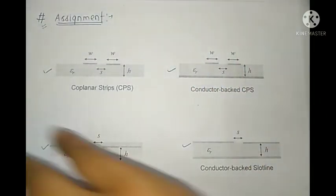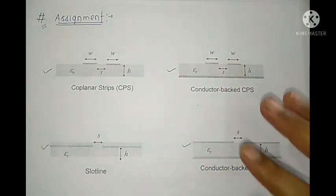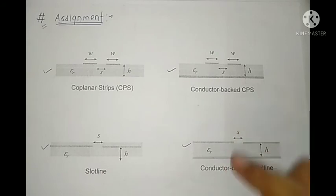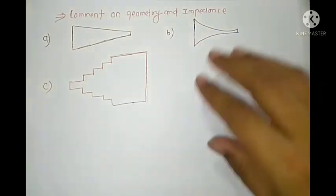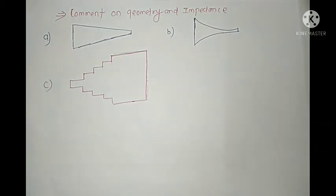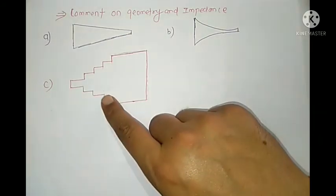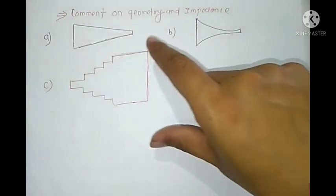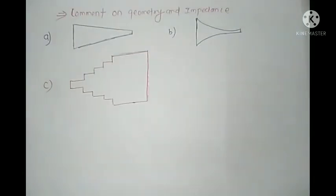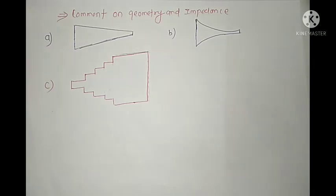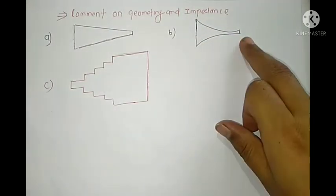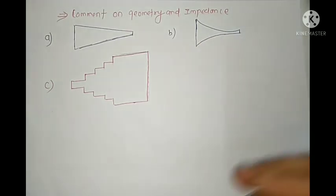This is an assignment for you: look at the given pictures and decide which ones are transmission lines, how many conductors are used, and whether each is uniform or non-uniform. By looking at the geometry, you can comment on uniformity. For example, when moving along the length in these figures, the dimension or cross-sectional area of the structure is changing — so we can directly say they are non-uniform transmission lines.